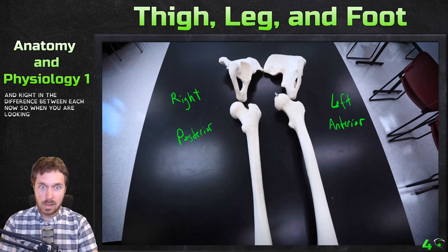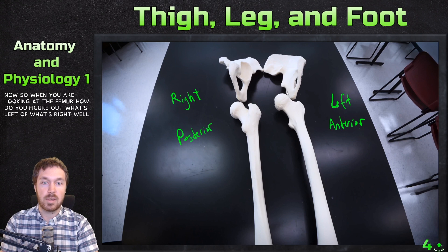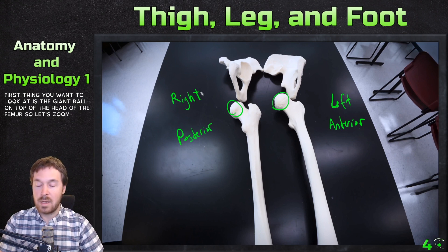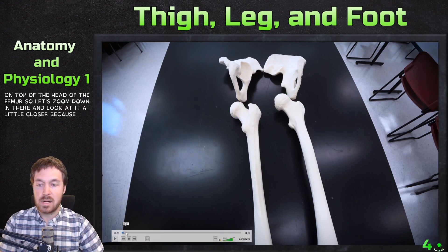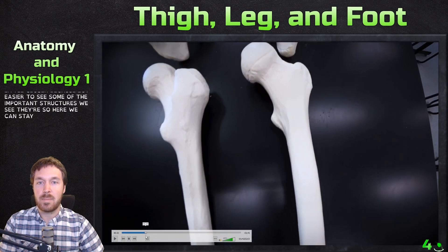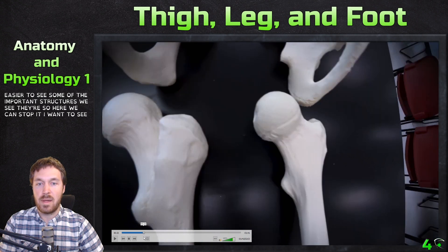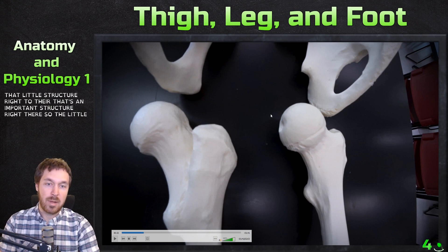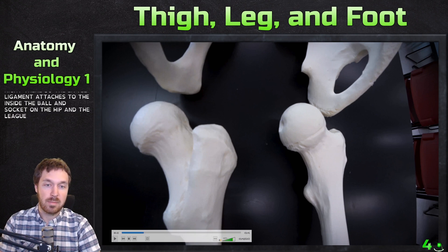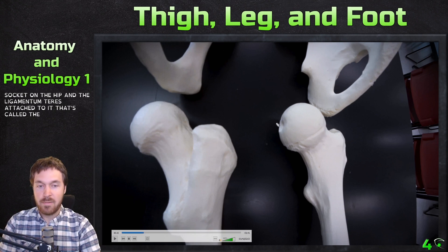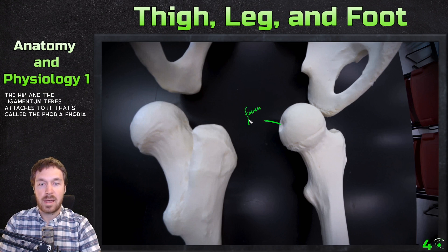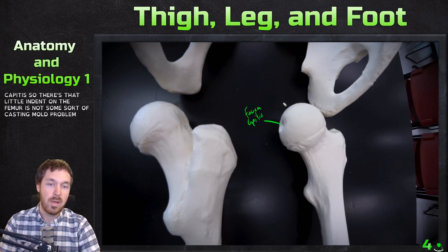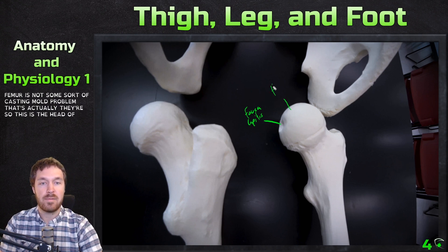When looking at the femur, how do you figure out left versus right? First, look at the giant ball on top — that's the head of the femur. Zooming in, there's an important small structure: that little indent is where the ligamentum teres attaches to the inside of the ball and socket on the hip. That's called the fovea capitis — it's actually a real indent on the head of the femur.